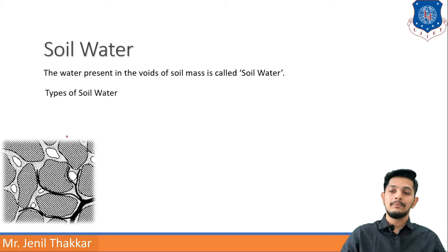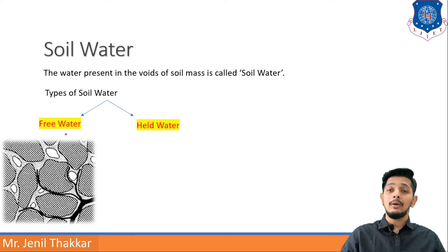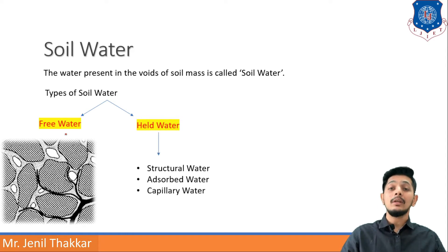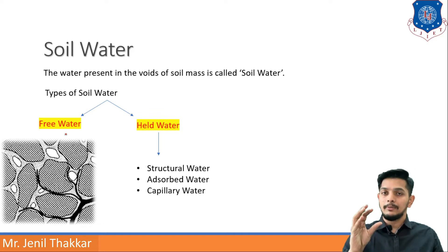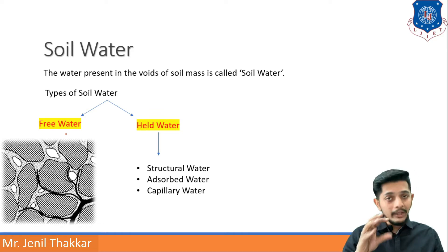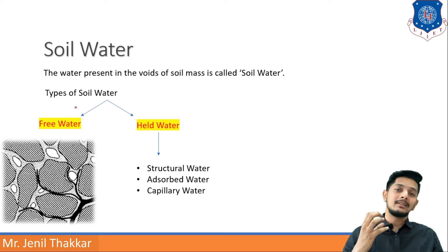Types of soil water: there are different types. First, free water, and second, held water. Held water has furthermore three types: structural water, adsorbed water, and capillary water. So these are the types of soil water — the water lying in the voids, but of different types.